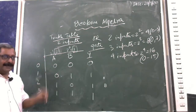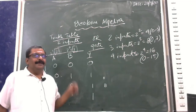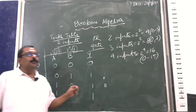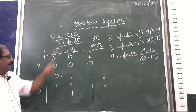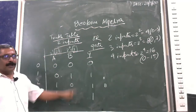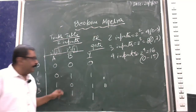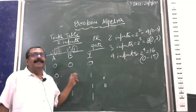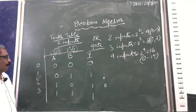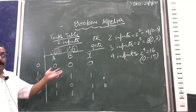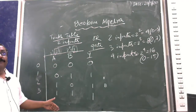Remember these two key points: in the AND gate, when any one of the input is 0, the output will be 0. In the OR gate, when any one of the input is 1, the output will be 1. That is the truth table of the OR gate.